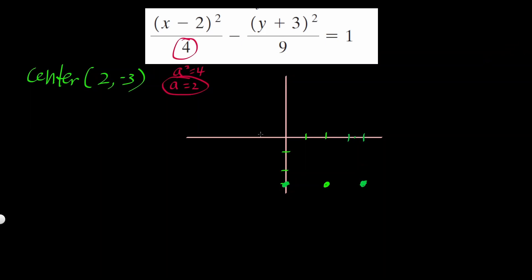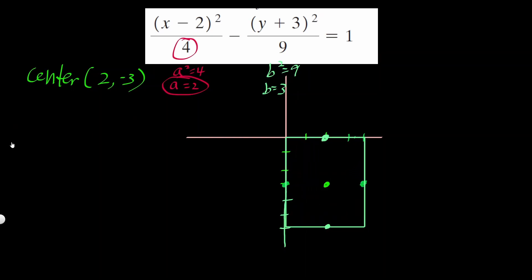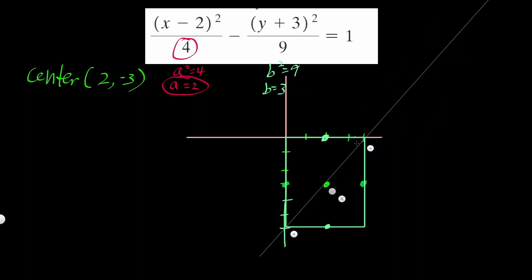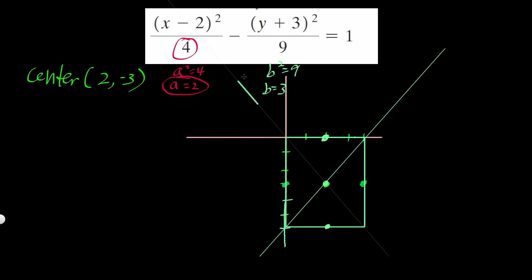Underneath y we have 9, so b squared equals 9, and b is going to be 3. I'm going to go up and down 3 from the center — always from the center. Then we're going to draw a rectangular box, with those dots being the midpoint of each side. Drawing the diagonal of that box, it always has to go through the center, and those diagonals are going to be my asymptotes.